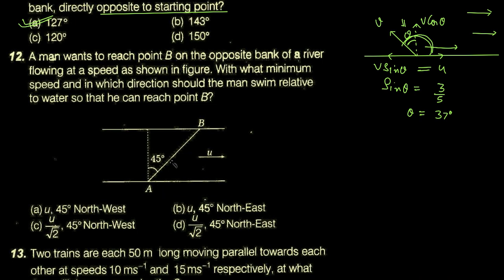B تک پہنچنا ہے تو net velocity اس direction میں ہونی چاہیے۔ Person کی velocity اور river کی velocity کا جو resultant ہوگا — person کسی طرف جانا چاہے گا، river کہیں اور لے جانا چاہیے گی — تو ان کا جو resultant ہوگا وہ 45 degree angle پہ ہونا چاہیے۔ تو ان چار options میں سے cross check کر لیتے ہیں کس کا resultant 45 پہ آئے گا۔